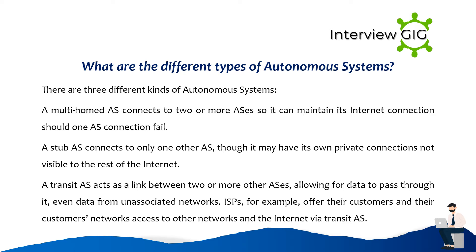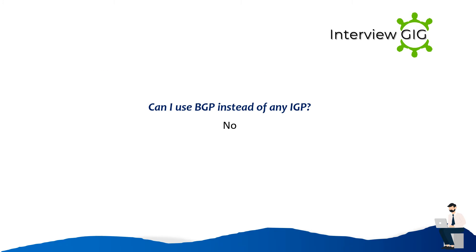What are the different types of autonomous systems? There are three different kinds. A multi-home AS connects to two or more ASes so it can maintain its internet connection should one connection fail. A stub AS connects to only one other AS, though it may have its own private connections not visible to the rest of the internet. A transit AS acts as a link between two or more other ASes, allowing data to pass through it, even from unassociated networks. ISPs, for example, offer their customers access to other networks and the internet via transit AS.